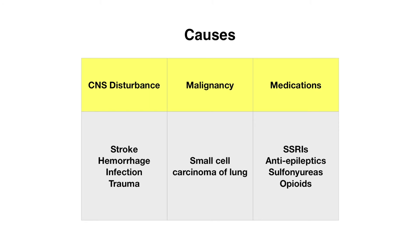This typically involves ruling out any thyroid disorders or any adrenal insufficiency. The most common causes of SIADH are a CNS disturbance such as with a stroke, hemorrhage, infection, or trauma. Another commonly tested one is malignancy, particularly small cell carcinoma of the lung. Medications can also cause this, particularly SSRIs, anti-epileptics, sulfonylureas, and even opioids. Interestingly, in cases of CNS disturbance or malignancy SIADH can be a chronic cause, but sometimes it can actually be transient in response to things like nausea and pain.